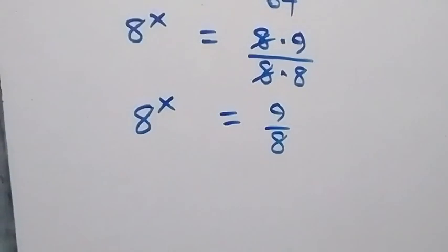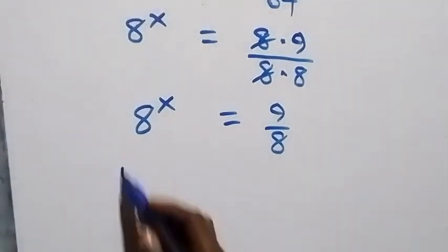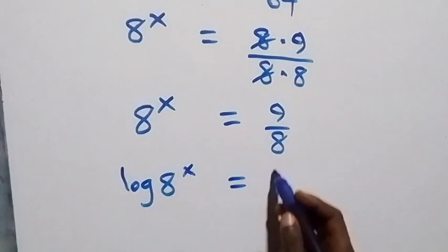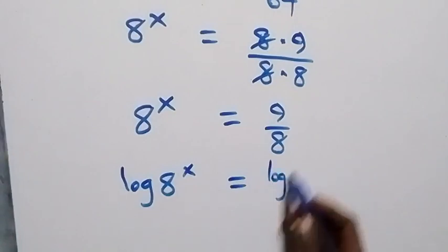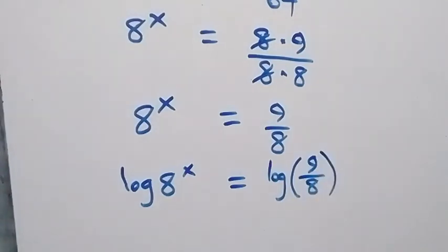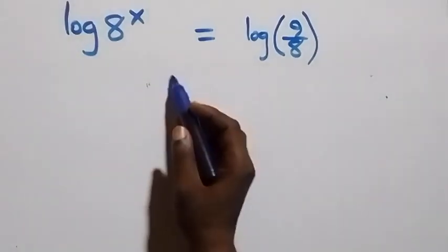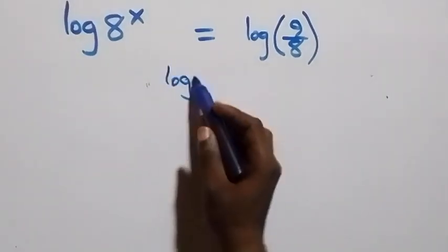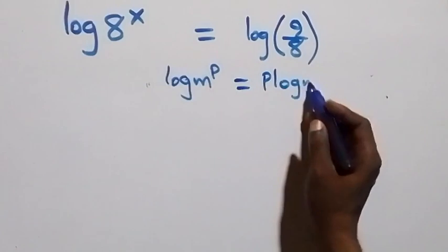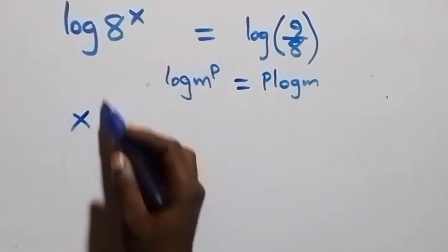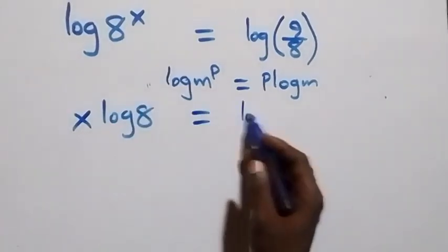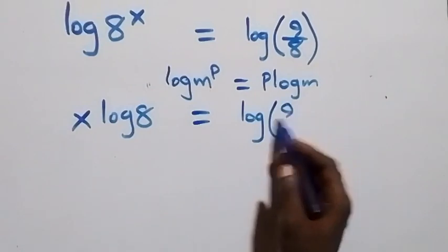From here we can take the log on both sides — that is, we have log of 8 raised to power x equals log of 9 over 8. We apply the power law of logarithm, where log m raised to power p equals p times log m, so this becomes x times log 8 equals log of 9 over 8.